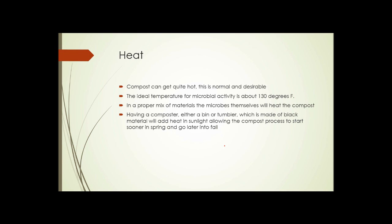Next, heat. Compost can get quite hot. The ideal temperature for microbial activity is about 130 degrees, somewhere between 115 and 135 degrees. In a proper mix of materials, the microbes themselves will heat the compost, raising its temperature to that. Having a composter, either a bin or a tumbler, which is made of black material, will add heat when sunlight falls on it, allowing the compost process to start sooner in the spring and go later in the fall and go at full speed even on cooler days.